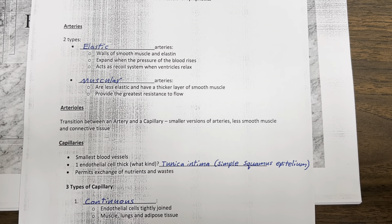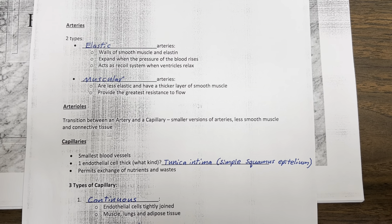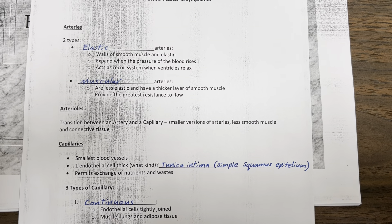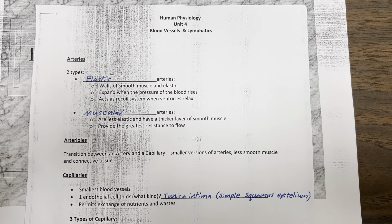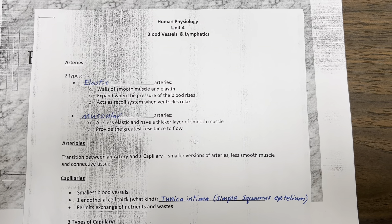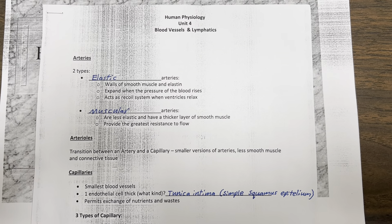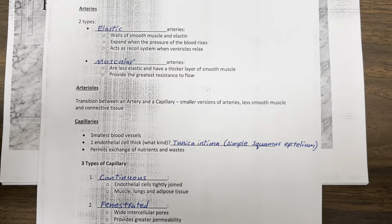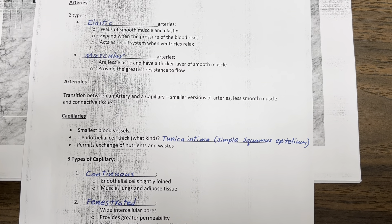Muscular arteries are less elastic and have a thicker layer of smooth muscle, providing greater resistance to flow. Elastic arteries are closer to the heart and muscular arteries are further away from the heart.